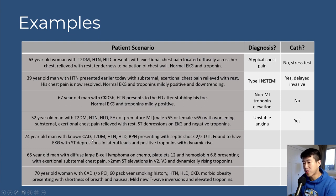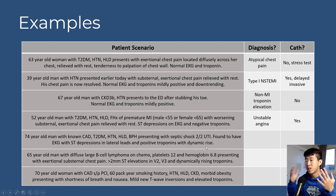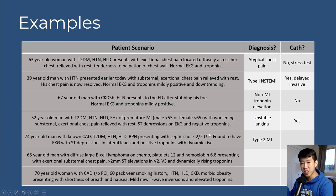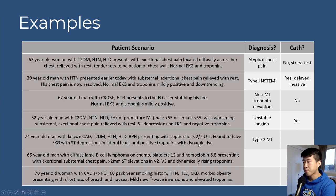Scenario 5: 74-year-old man with known CAD, type 2 diabetes, hypertension, hyperlipidemia, and BPH presenting with septic shock from UTI, ST depressions in lateral leads, and dynamically rising troponins from 100 to 500 to 1,200. This is a type 2 MI due to supply-demand mismatch from septic shock. Treatment focuses on the underlying condition. No cardiac catheterization indicated.